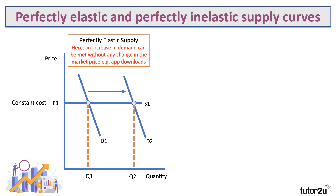Here are two extreme values. First, a perfectly elastic supply curve — sometimes called a constant cost supply curve — where any change in demand can be met almost immediately without any change in the market price. In class, examples discussed included app downloads and in-game purchases, where supply is essentially perfectly elastic.